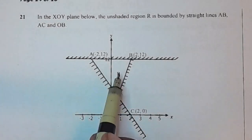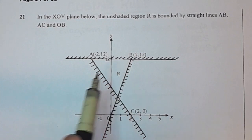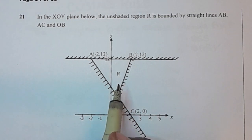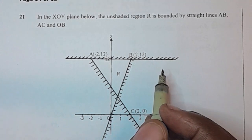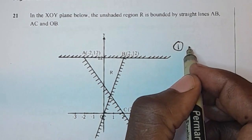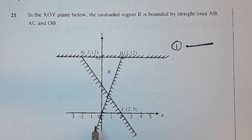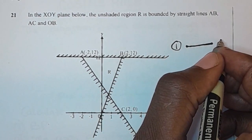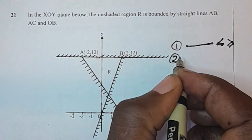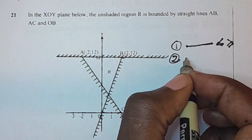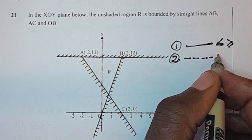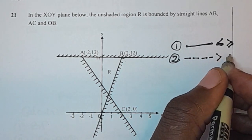Before you start answering the question, there are three important things you're supposed to know when writing inequalities. Number one: is the line dotted or full? If you have a full line, your inequality will have either less than or equal to, or greater than or equal to. Number two: if the lines are dotted, then your inequality will have either greater than or less than.